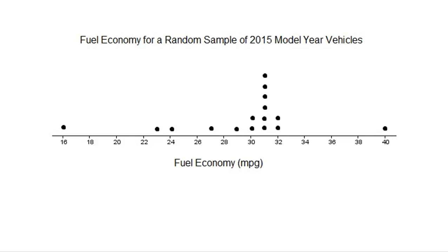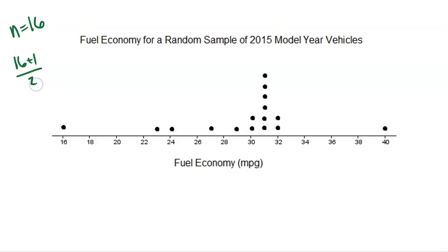Here's another example: fuel economy for a random sample of 2015 model year vehicles. Every dot represents the gas mileage. How many total cars do we have? Counting: 1, 2, 3, 4, 5, 6, 7, 8, 9, 10, 11, 12, 13, 14, 15, 16 — we have 16 total vehicles. To find the median: 16 plus 1 is 17, divided by 2 is 8.5. So right between the 8th and 9th values is the median. Counting to the 8th and 9th dots — every dot in that row is 31, so right between 31 and 31 is 31. My median is 31 miles per gallon.